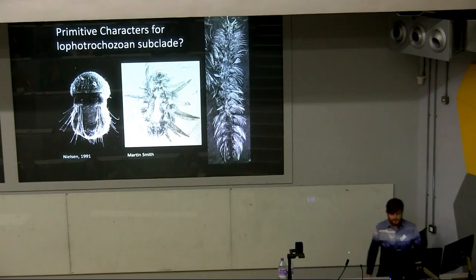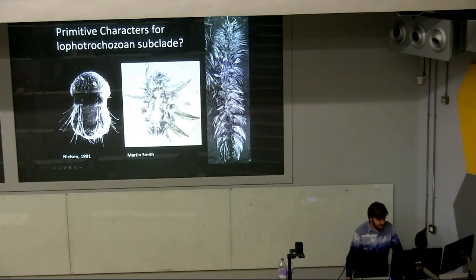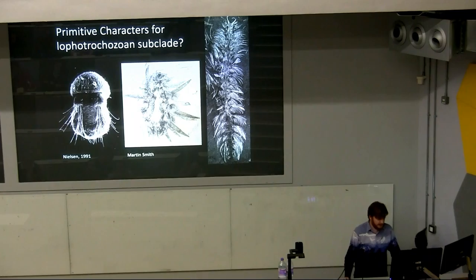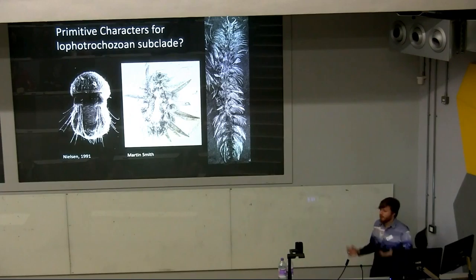Finding these groups with protective bristles at the base of annelids may tell us something about primitive characters in a broader sense, possibly for a Lophotrochozoan subclade. A brachiopod larva — Crania — also shows transverse rows of posteriorly-directed chaetae. We also see transverse rows in a stem group mollusk, Wiwaxia, with serially repeated transverse rows of protective bristles. My hypothesis is that Lophotrochozoans, or at least the clade uniting annelids, brachiopods, and mollusks, evolved from an epibenthic ancestor bearing an organic sclerotome of protective bristles.